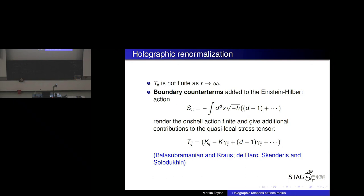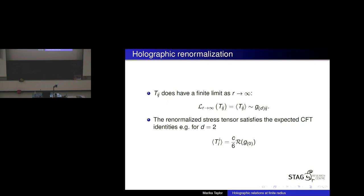These counterterms render the on-shell action finite and give additional contributions to the quasi-local stress tensor. The first counterterm gives a term proportional to the metric itself, with further terms involving the curvature. This was first written down by Per Kraus and Vijay, and then the full details in all dimensions were analyzed by Sebastian de Haro, Kostas, and Skenderis. The resulting quantity capital T is manifestly finite. This is the familiar expression used to calculate the stress tensor in the dual quantum field theory, and it satisfies the correct trace anomaly — for example, in two dimensions, you get the term proportional to the central charge.